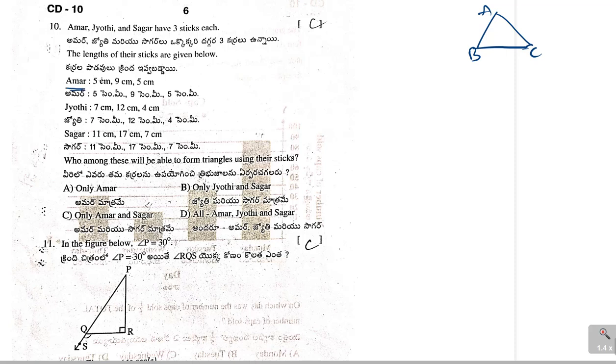If you take Amar, 5 plus 5, 10 greater than 9. Then, 5 plus 9 greater than 5. So, it works. So, Amar can form the triangle. Now, Jyoti, let us take here 7, 12, 4. If we add 7 and 4, that will be 11. It is not greater than 12. It is less than 12. So, Jyoti can't make a triangle. Next, Sagar, 11, 17, 7. Here also, it works, Sagar. So, Amar and Sagar can form triangles. So, option C is correct.